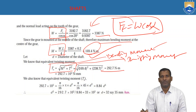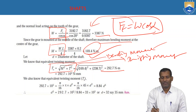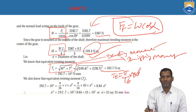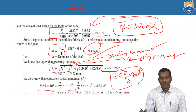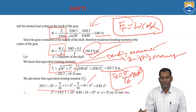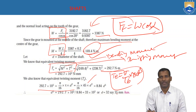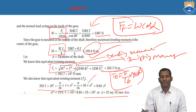Substituting bending moment M = 169.4 Nm and twisting moment T = 238.7 Nm, the equivalent twisting moment Te = 292.7 Nm. We also know that Te = (π/16) × τ × d³. Here τ is the given shear stress value of 45 MPa. Substituting Te = 292.7 Nm, we find the diameter d = 35 mm.